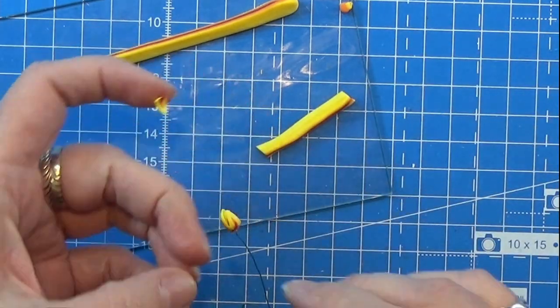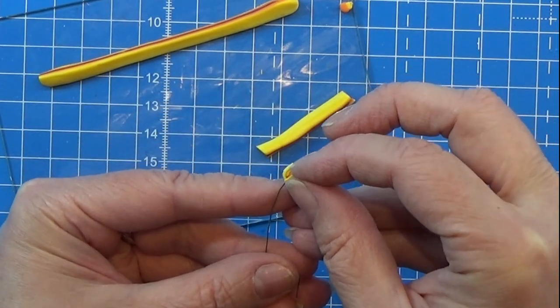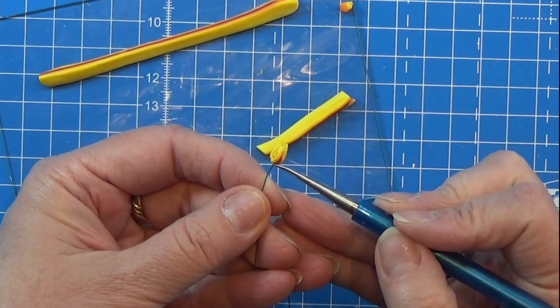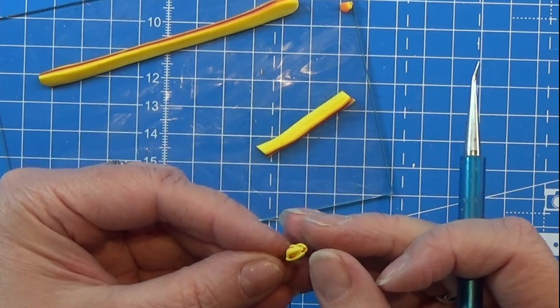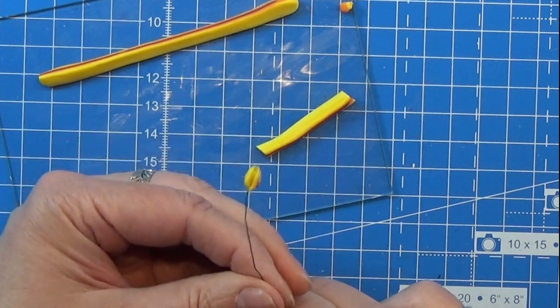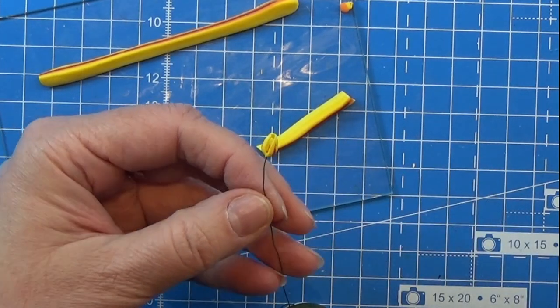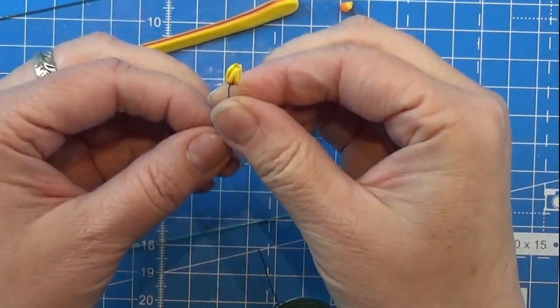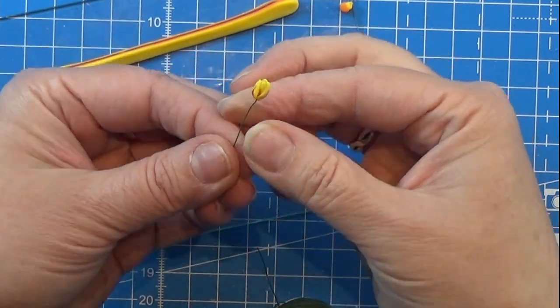So here we have the first tulip ready for baking the first time. I will bake these twice. So I'm just correcting the petals here just to make sure it's sitting like I wanted to. Then I am deciding where to cut the wire. Don't cut it too short. You rather want it too long. You can always cut it shorter later. Make as many of these as you want to and then bake them.